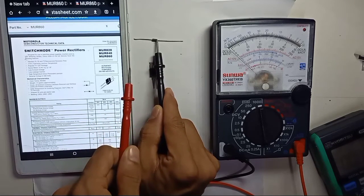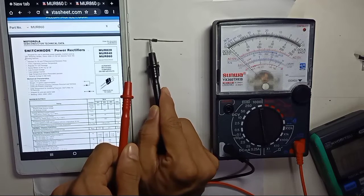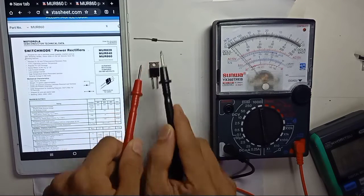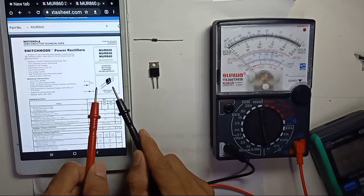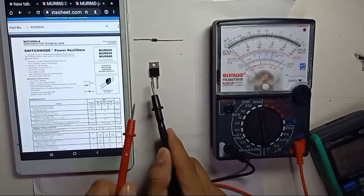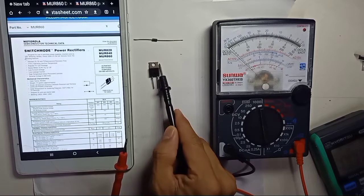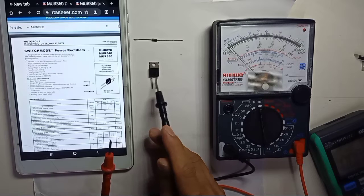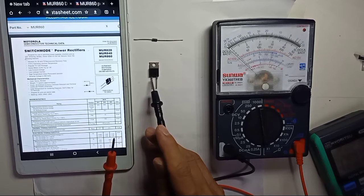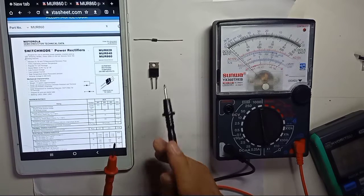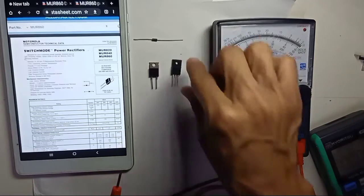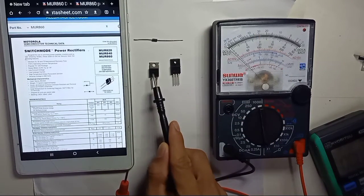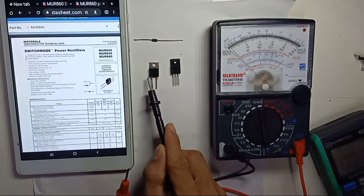Anode to cathode, which means black to this black side, this side is the white side. This MUR package has two pins and one body. Basically, this kind of package will have three pins: one, two, three. But this MUR rectifier has only two pins.